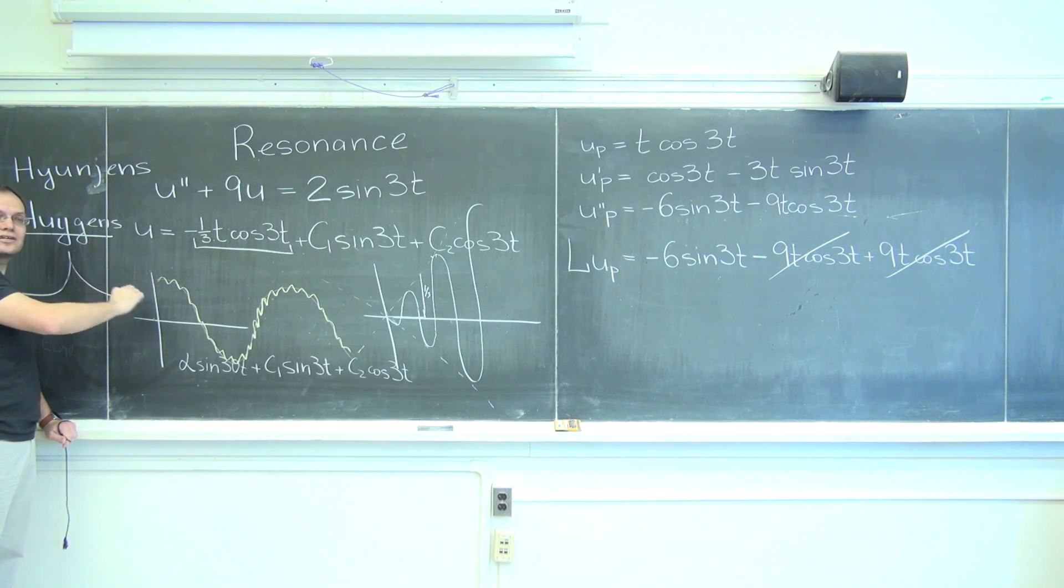So he figured out what this shape would need to be and it was a cycloid, the shape that a point traces when a wheel rolls on the road. So kind of an amazing result, but where were we?